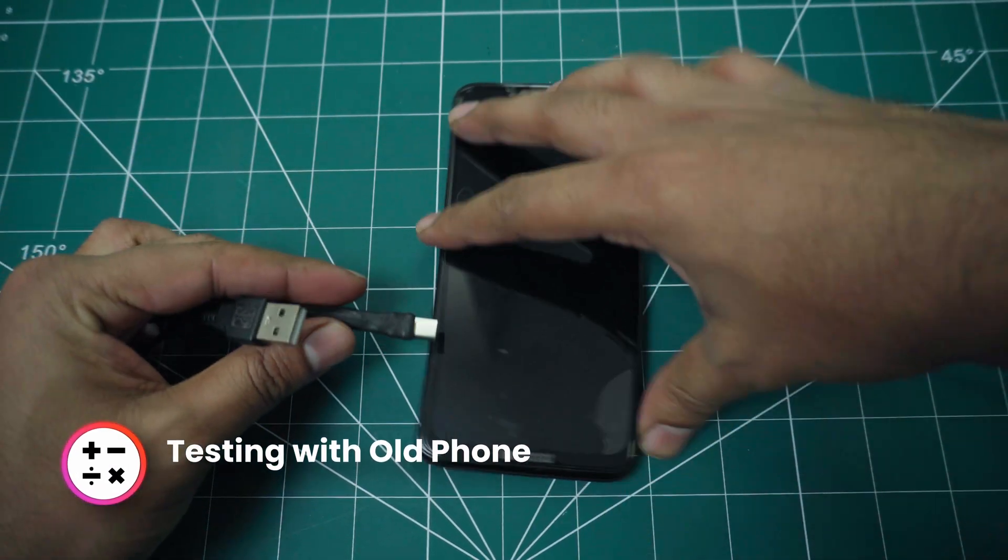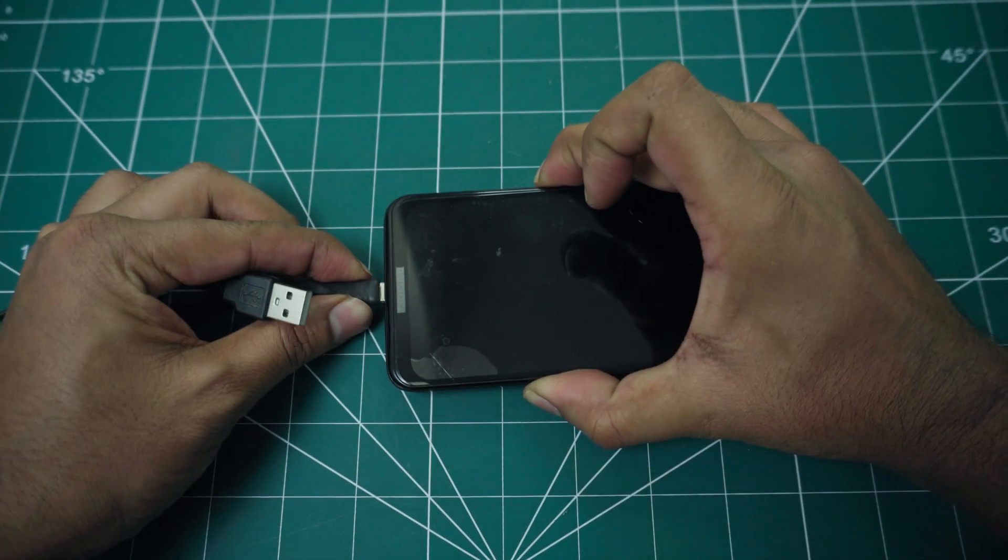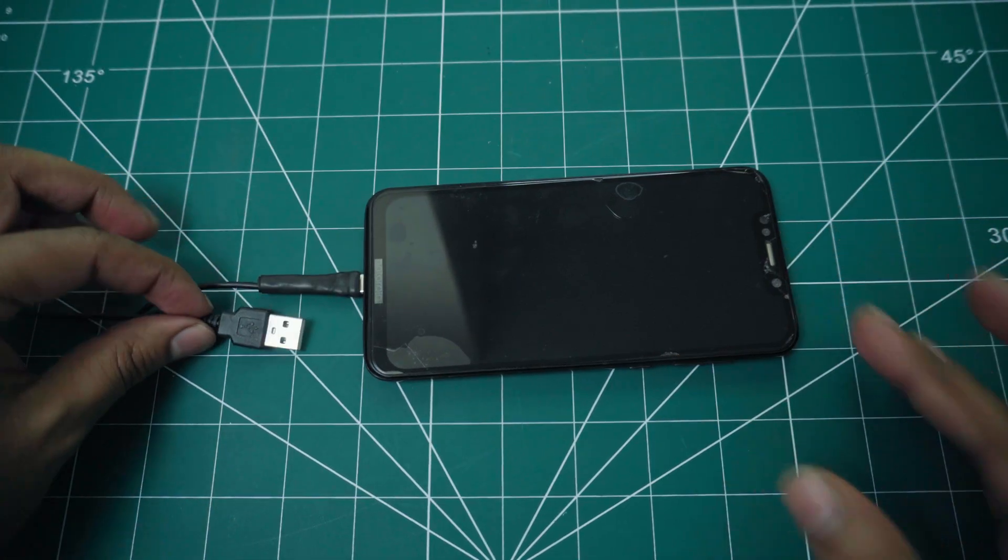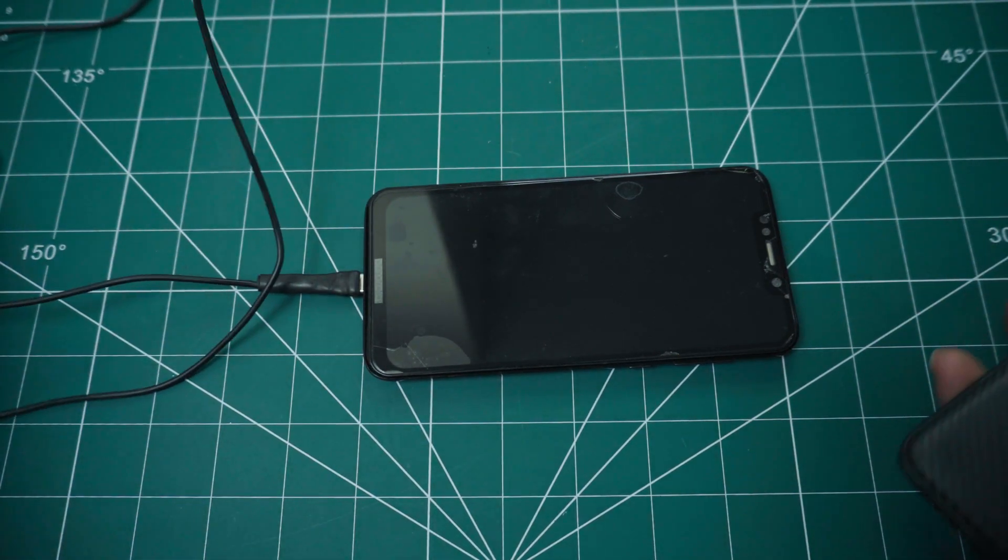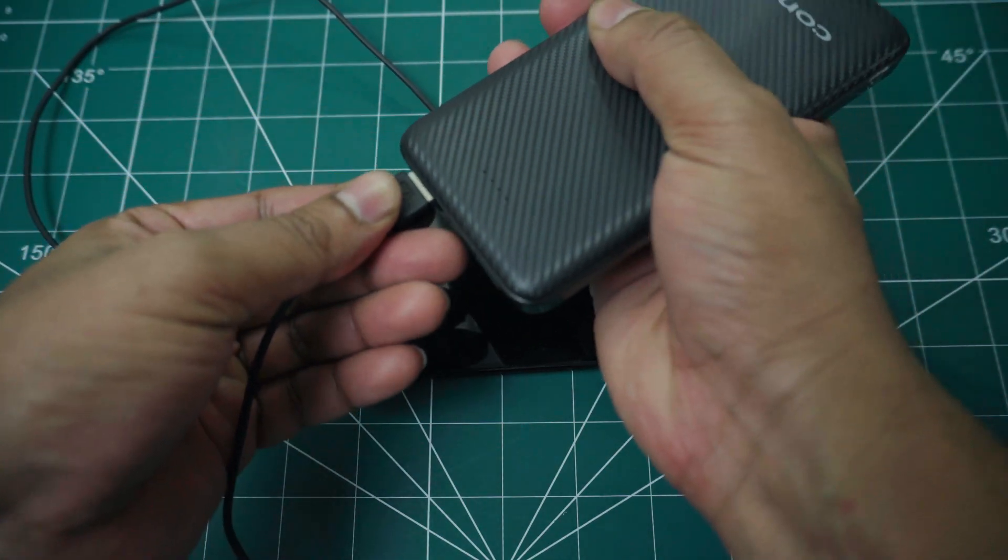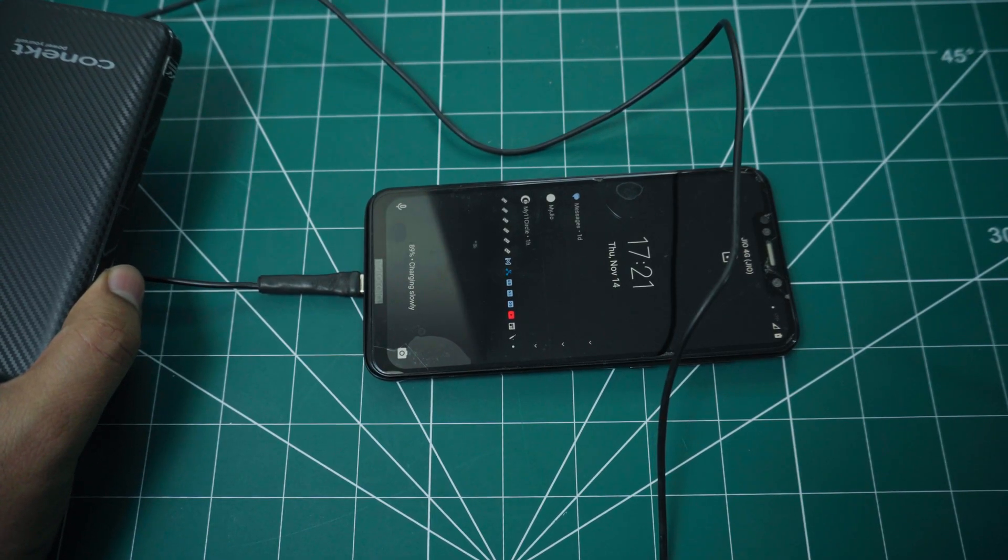Connect the cable to your phone and power source to test if it can charge your phone or any other device. As you can see, the phone is charging.